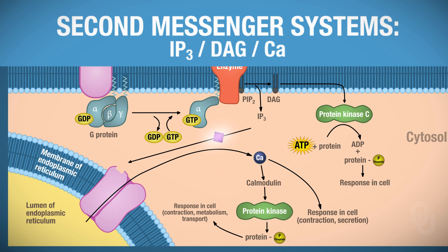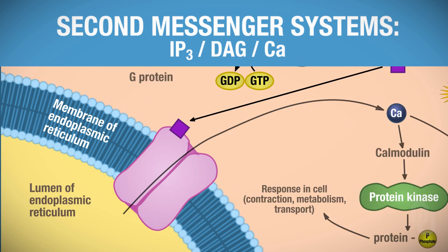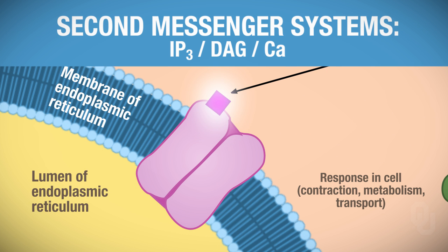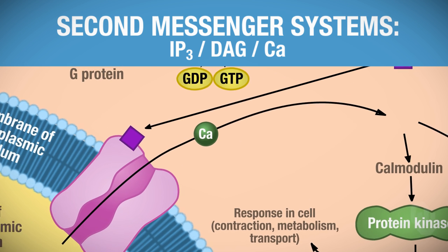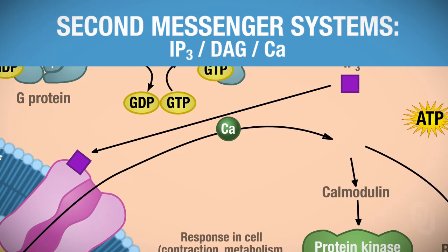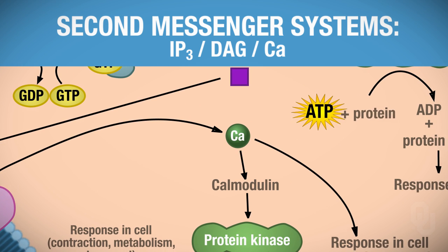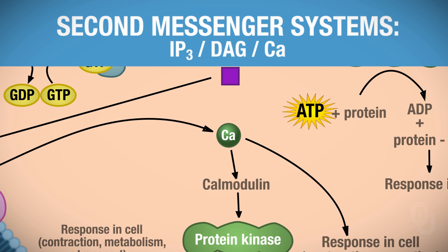IP3 binds to a channel on the endoplasmic reticulum — this is the plasma membrane of the endoplasmic reticulum. IP3 binds to this channel, the channel then opens, and when the channel opens, calcium — there's a high concentration of calcium inside the endoplasmic reticulum — calcium will leave via the channel and enter into the cytoplasm. This green ball represents calcium, which is also a second messenger.